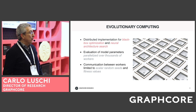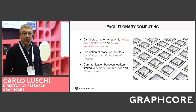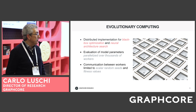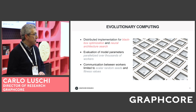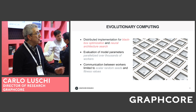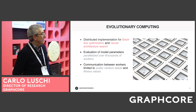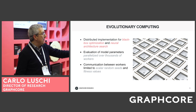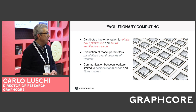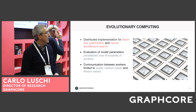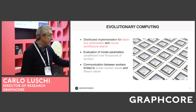Evolutionary computing is essential as a black-box optimizer and is also one of the more important approaches for neural architecture search, where we are working on a number of possible strategies. As a general optimizer, evolutionary computing naturally extends training over a massive number of workers, parallelizing the training of different offspring of an initial model parameter set over thousands of workers with reduced communication overhead.